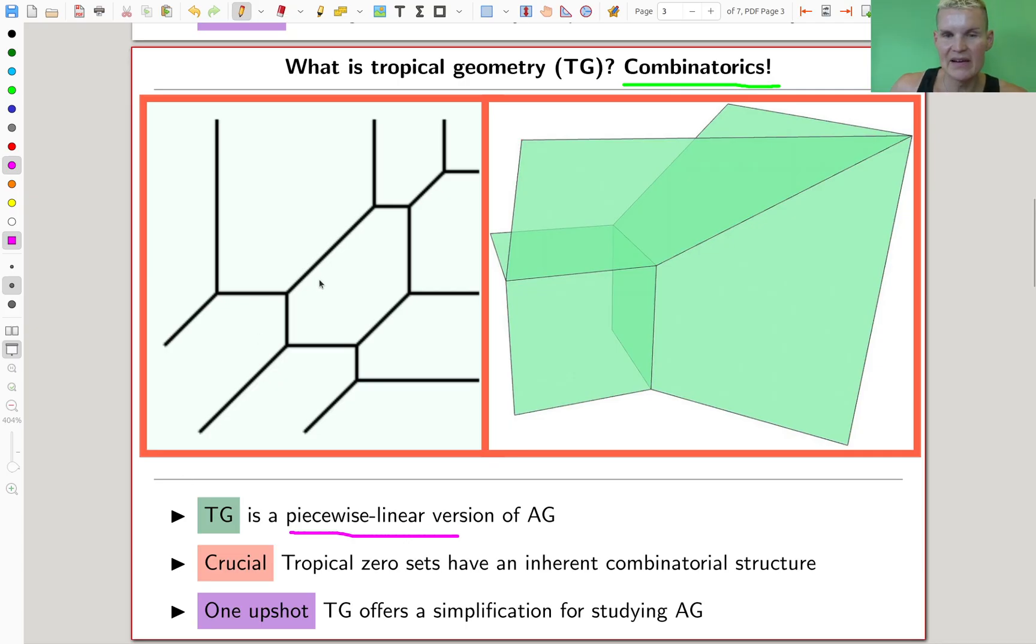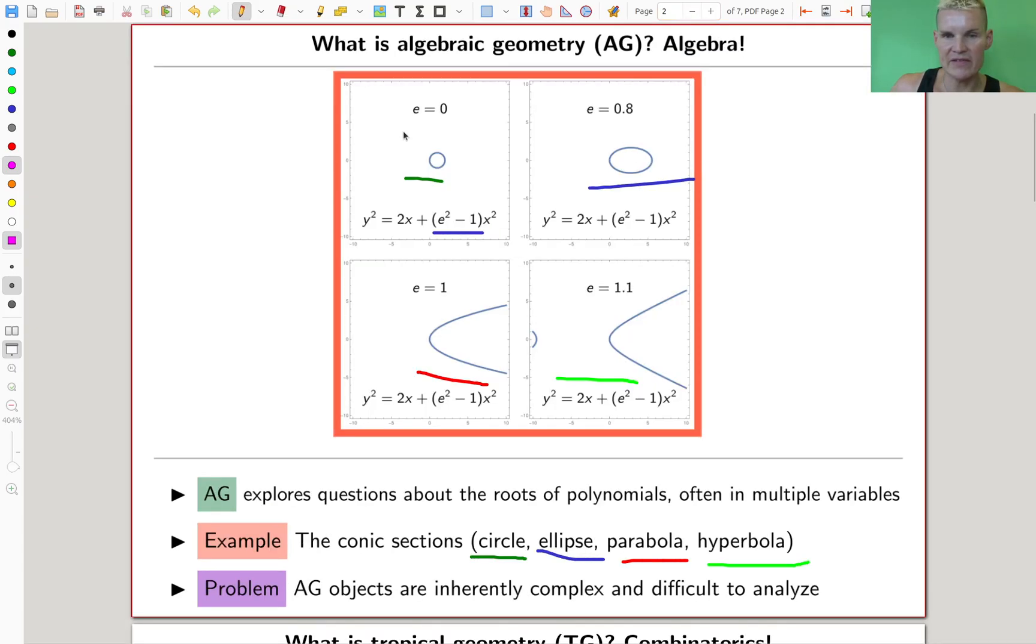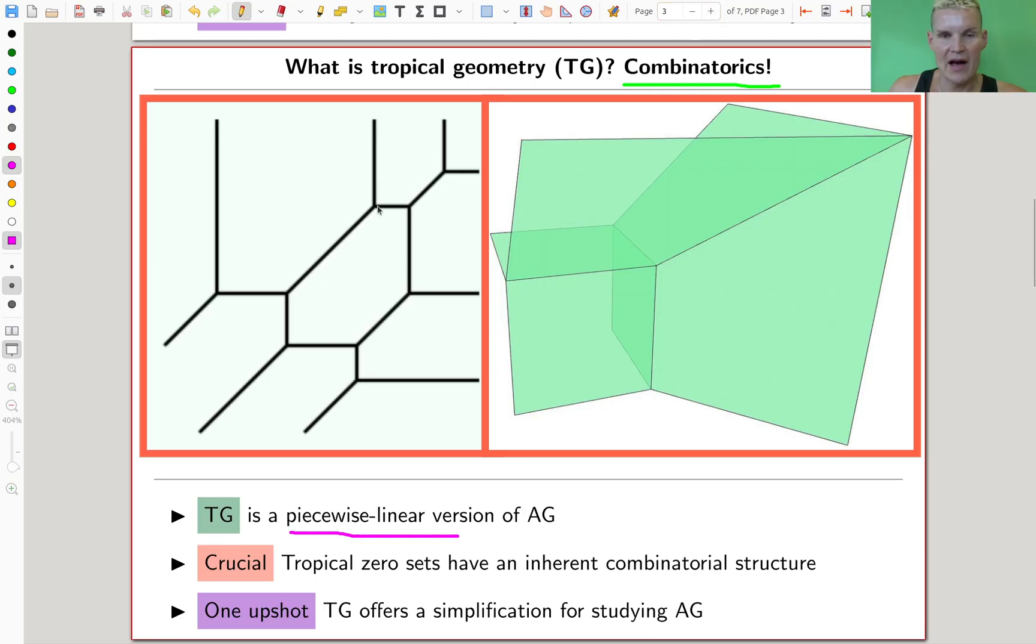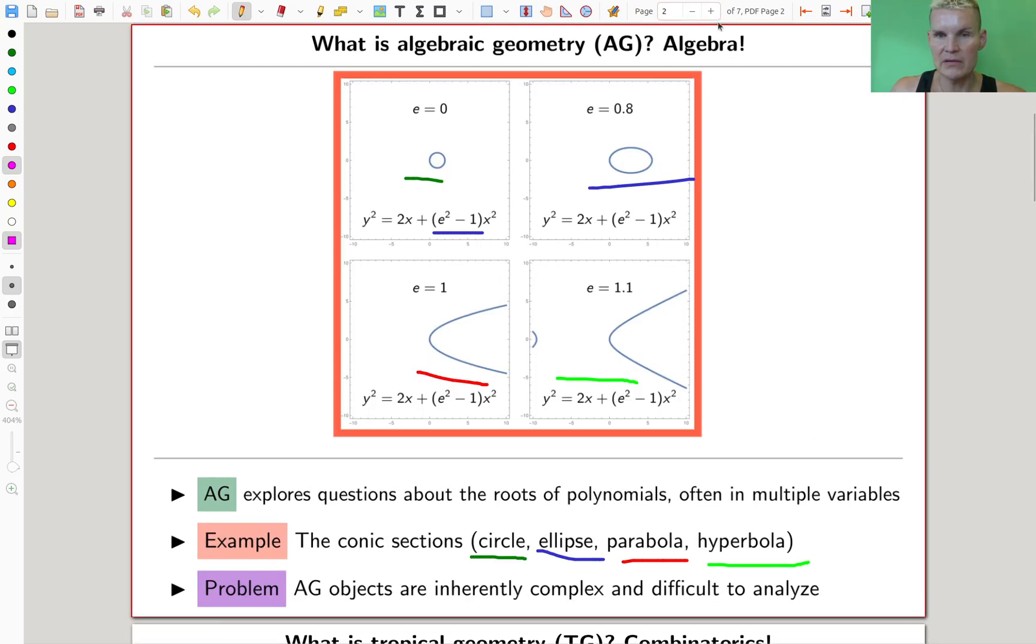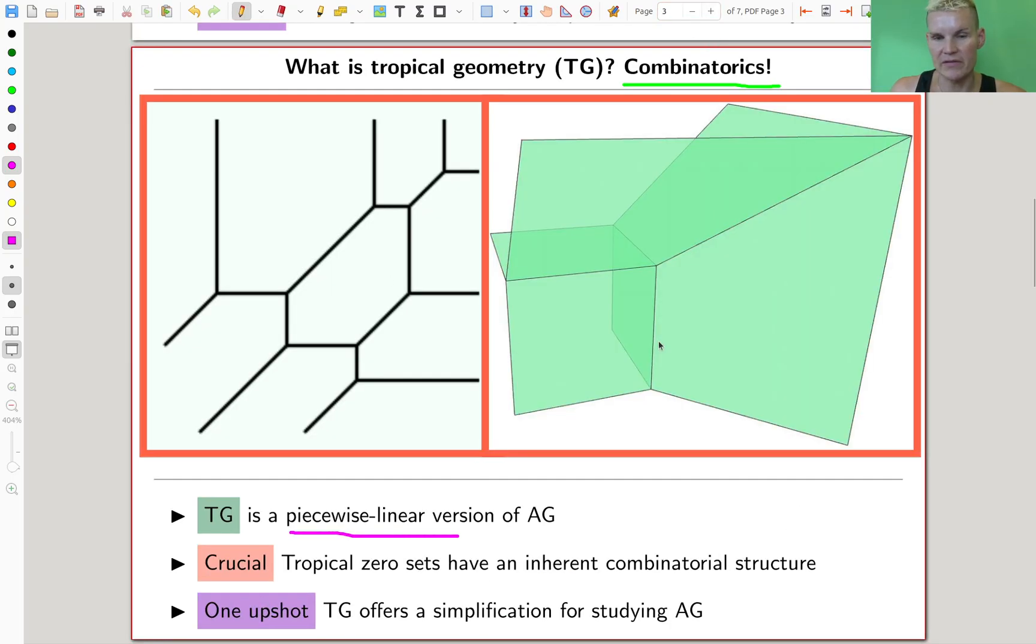And the fun thing is, you can kind of already see that. So this is a zero set now. Before, zero sets were more like smooth things, like circles, ellipses, something. And now zero sets are those very singular things with a lot of edges. Like more like a graph, piecewise linear. And they have an inherited combinatorial structure. So here, algebra, here combinatorics. So it offers somehow a simplification for studying algebraic geometry.